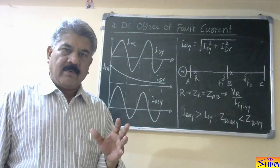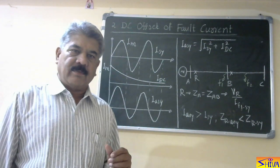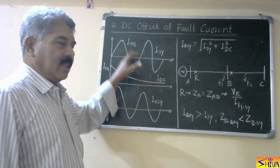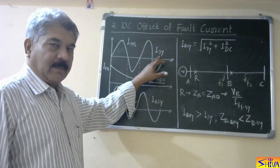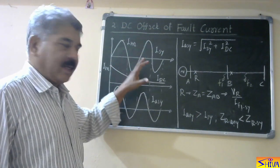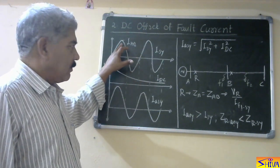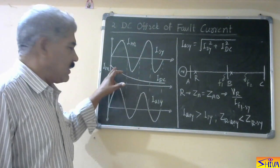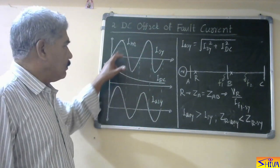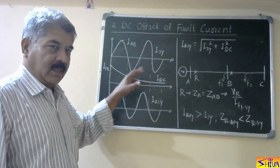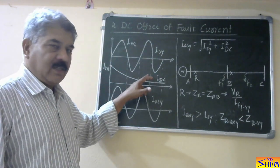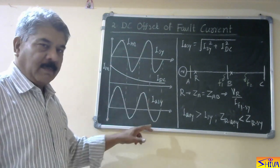First, I will explain briefly what is DC offset of the fault current. When the fault current is symmetrical, the positive half cycle and negative half cycle are equal in magnitude, with peak value Im. When DC offset is present, it is exponentially decaying and in the worst condition it can go up to the peak value of the symmetrical component of the fault current. So the actual fault current is a combination of symmetrical fault current and DC offset, and the resulting waveform will look like this.